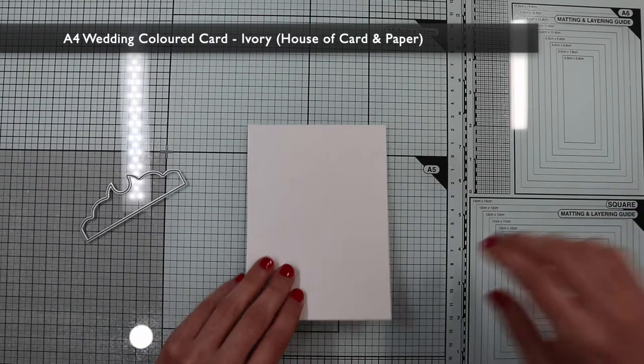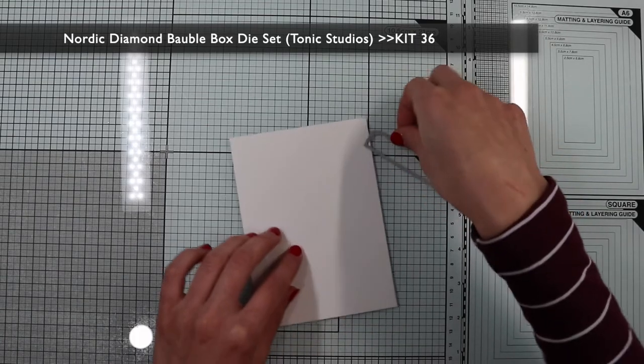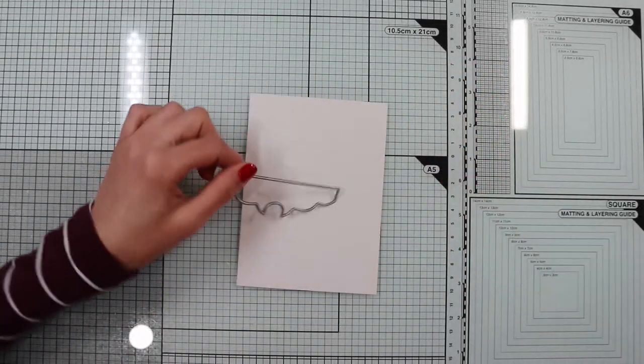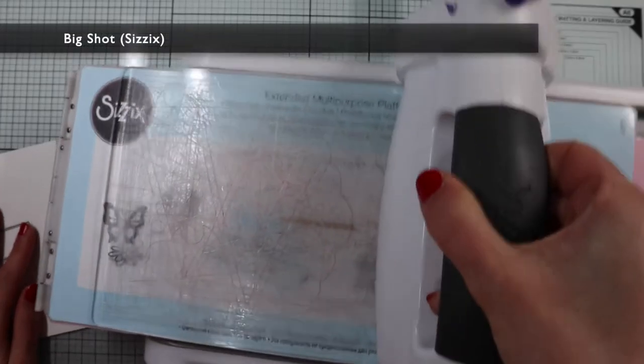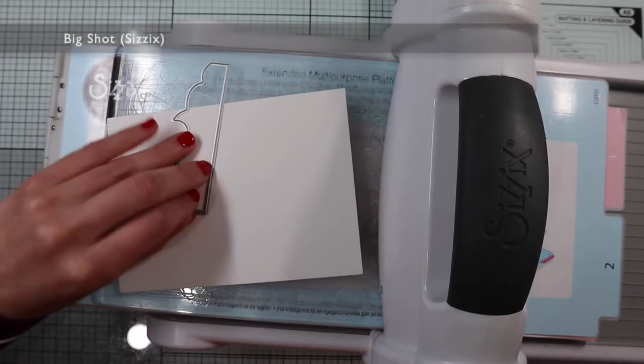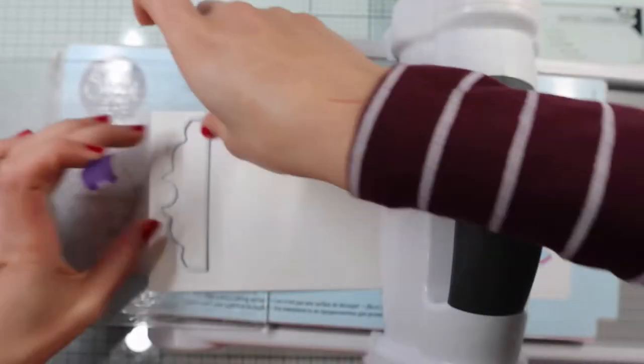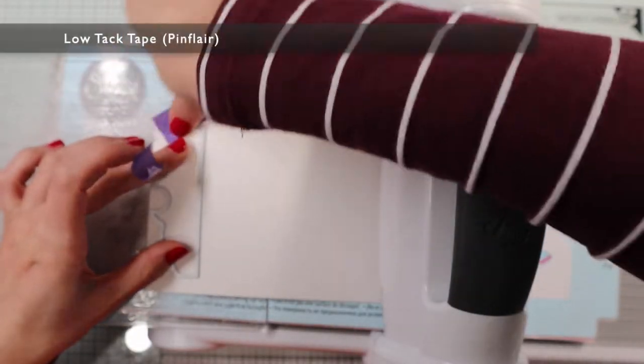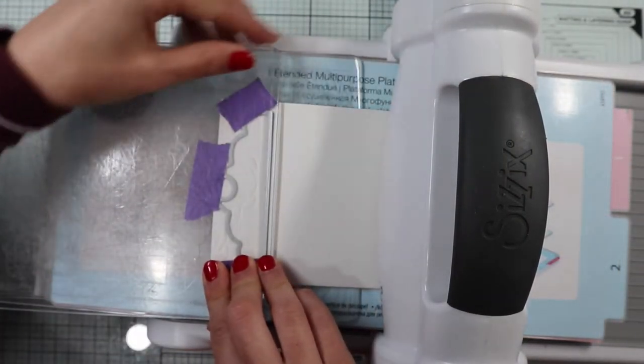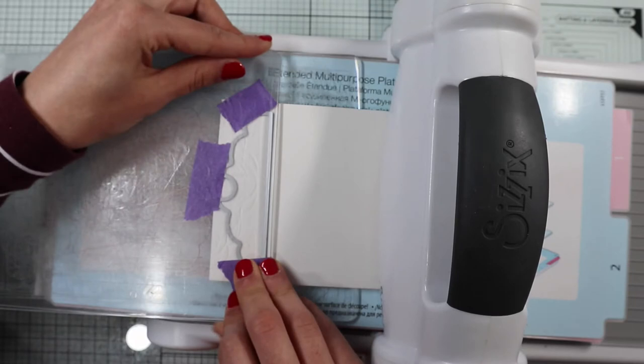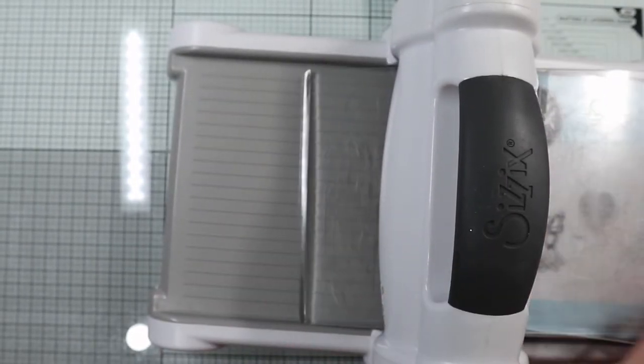For my second card I will create a banner. I'm going to use the die of the kit to create the bottom border. To do that I will do a partial die cut, leaving the blade of the long side of this die out of the Sizzix plate. In general, a partial die cutting can be performed leaving outside the plate all the part that you don't want to cut. In this way, in my case the long side will not be cut, getting this.